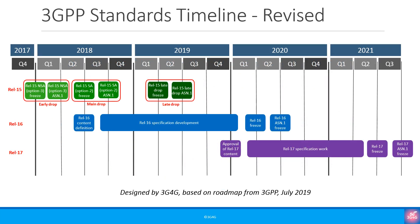A quick recap of Release 15, 16 and 17 timelines. All Release 17 content is expected to be approved by December 2019, which is in the next few weeks. The specification work will start next year, and we can expect Release 17 freeze in June 2021 followed by ASN freeze in September 2021.